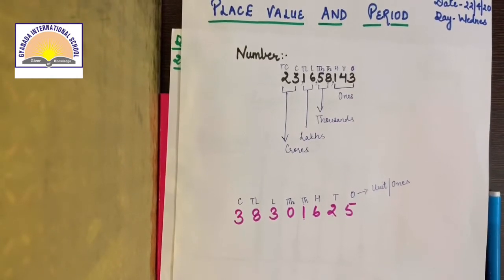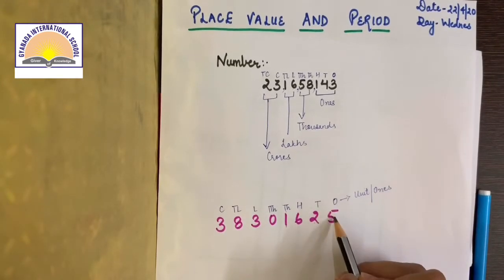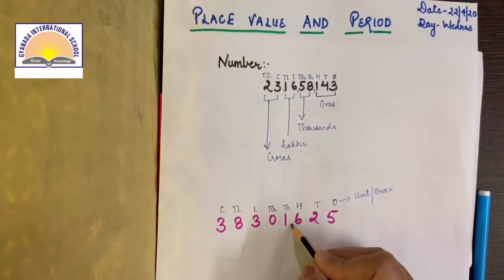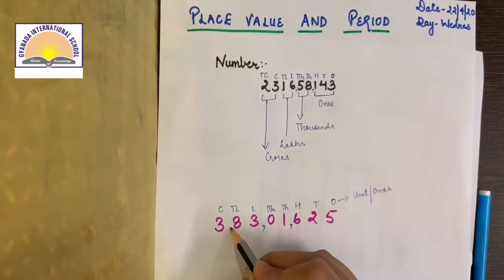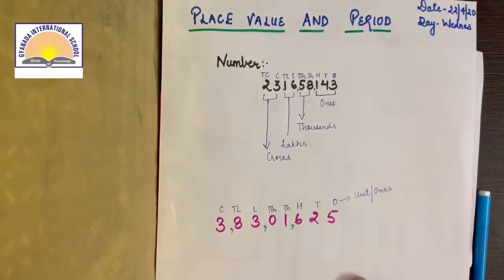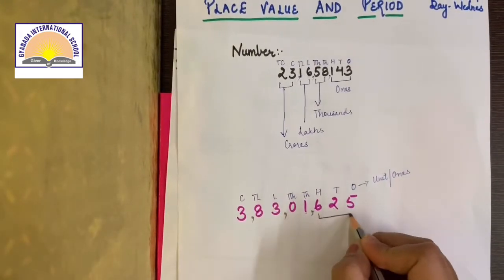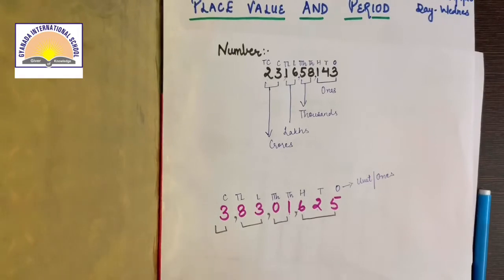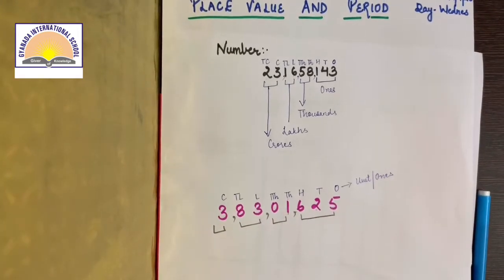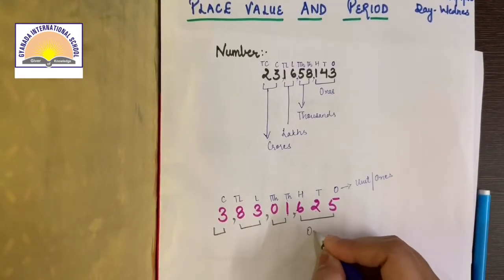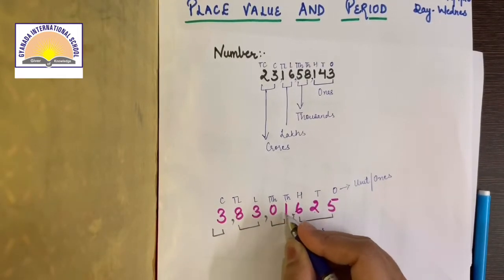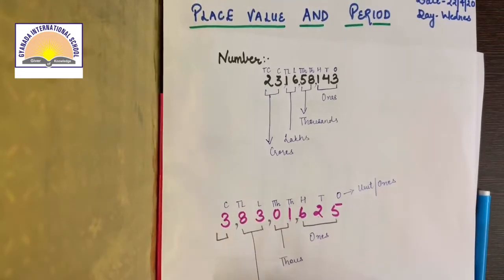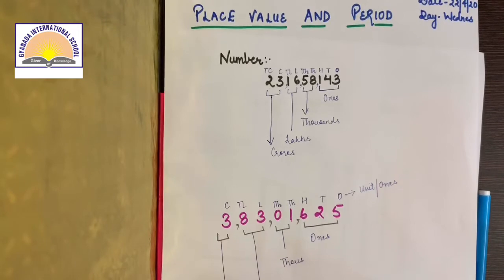Now second step me humne kya bataya hai? Commas. Always put commas. How do we put commas? We start counting from ones place. Three, then two, then two. One, two, three, comma, one, two, comma, one, two, comma, one. There is no more number. So yeh jo comma se partition ho gaye, yeh ban gaye hamare periods. Kya ban gaye yeh? Periods. First period ko, HTO wale period ko hum kya kehte hain? This is the period of ones. This is the period of thousands. This is the period of lakhs. And three is the period of crores.